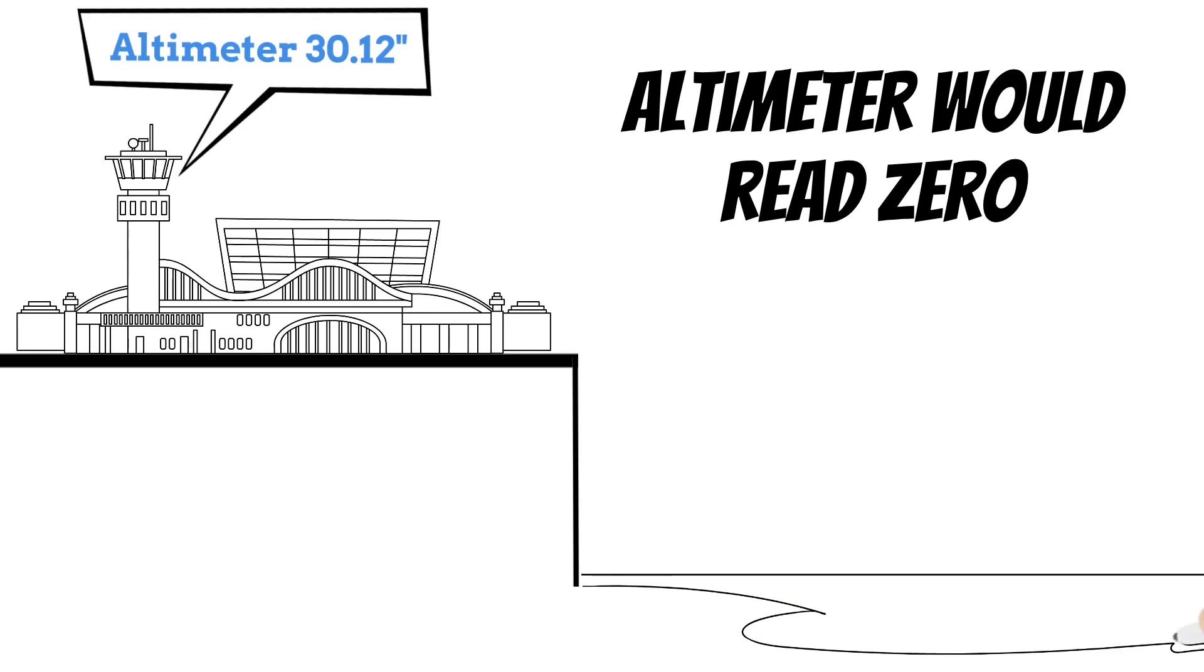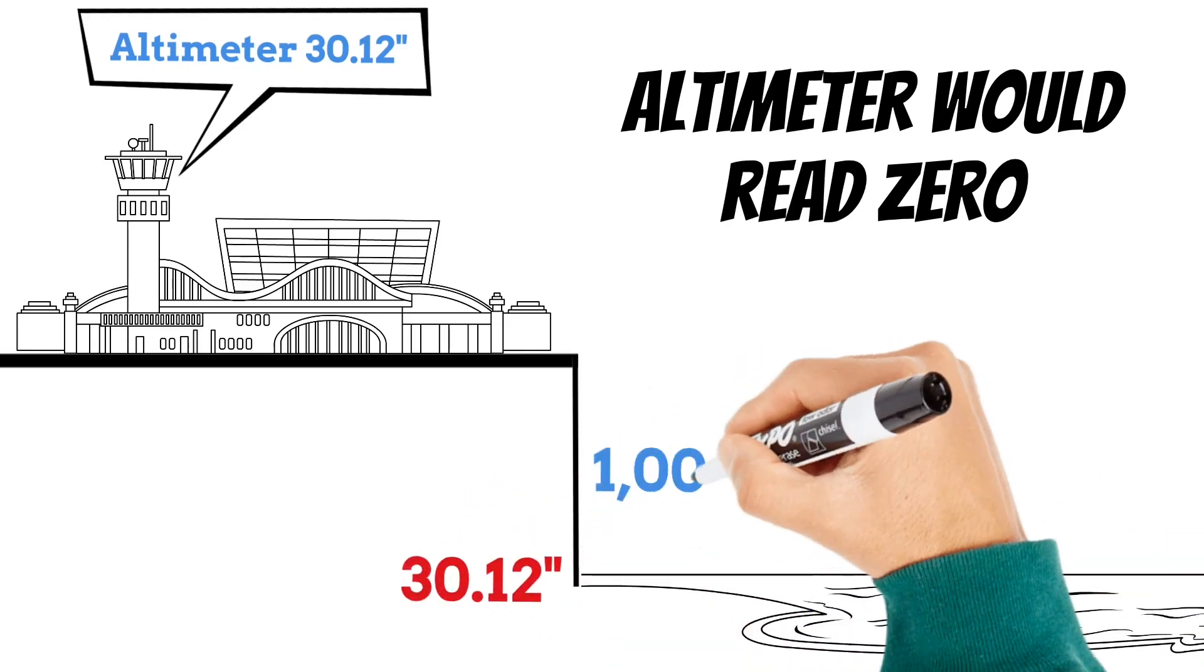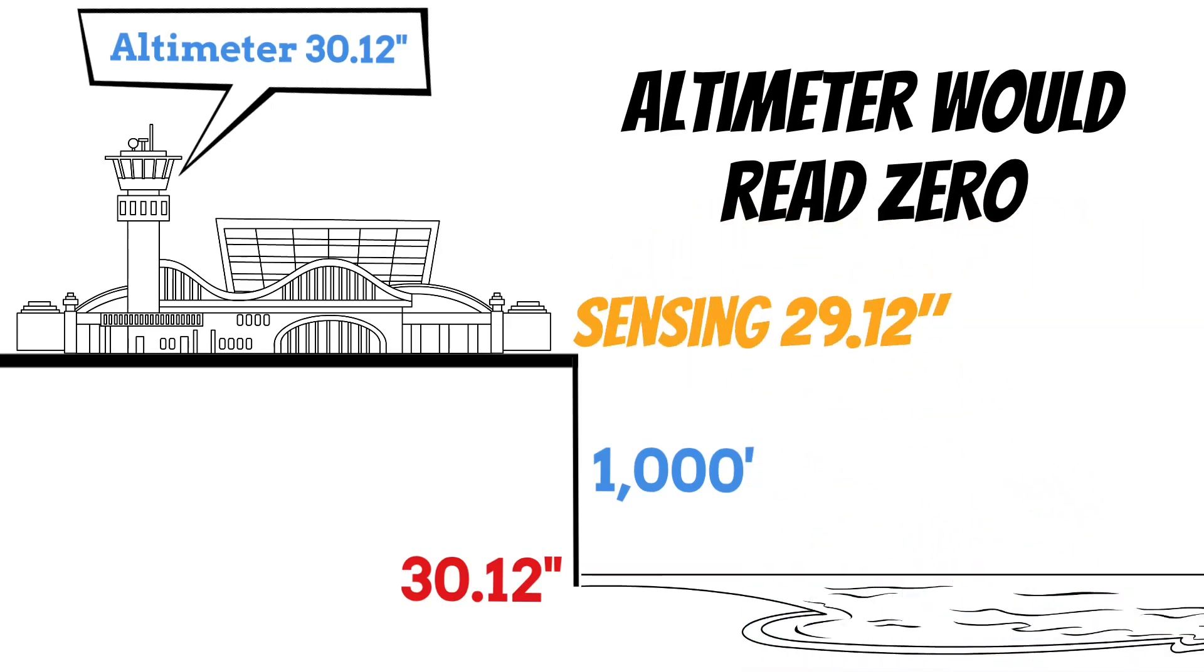That way your altimeter knows exactly what altitude you're at. And because of that, the altimeter knows that we're at 1000 feet MSL because it's sensing a pressure of 29.12 inches of mercury.